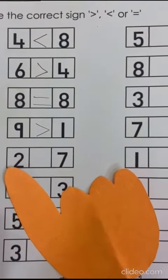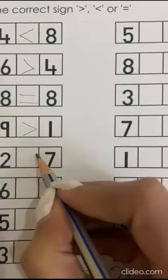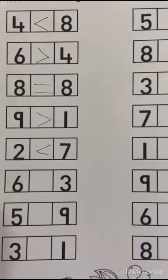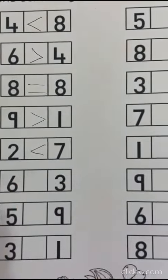2 is smaller than 7, absolutely right. 6 and 3, 6 is greater than 3.